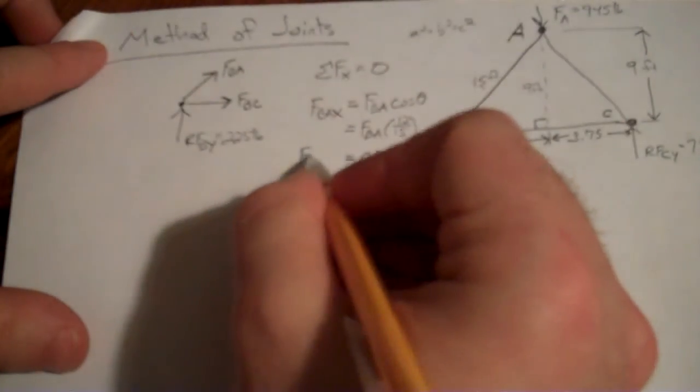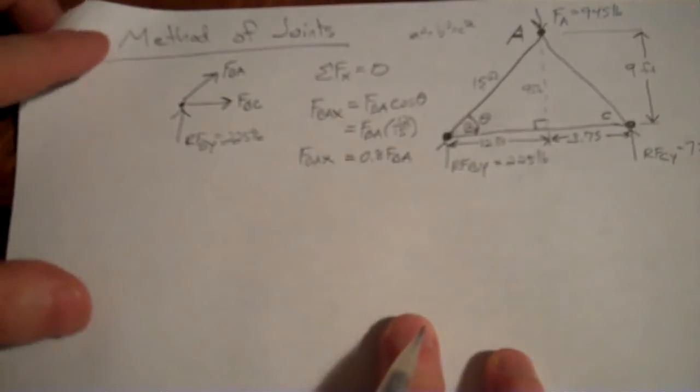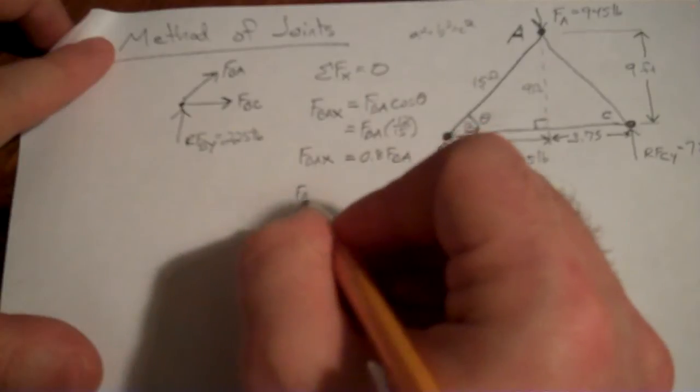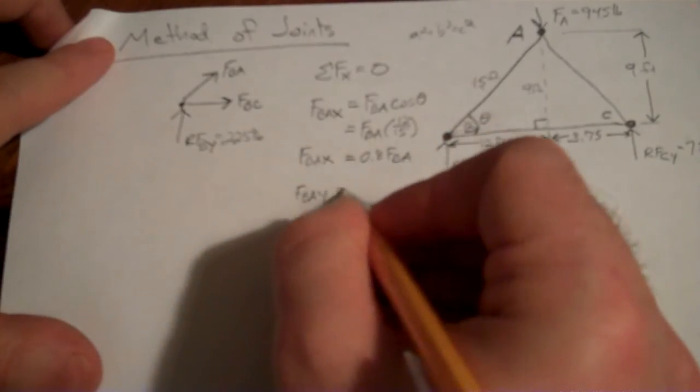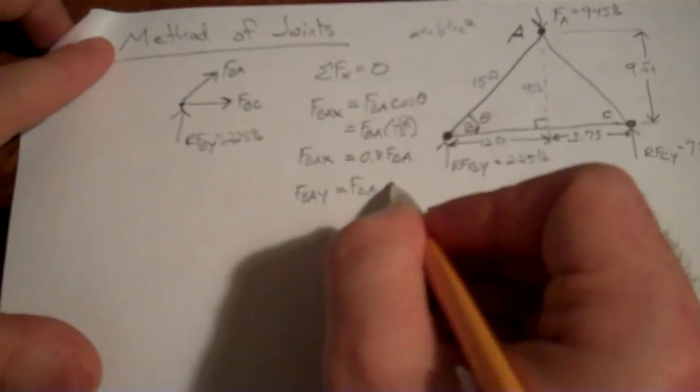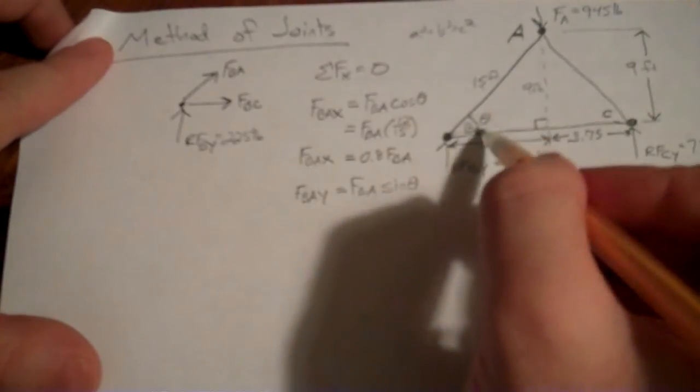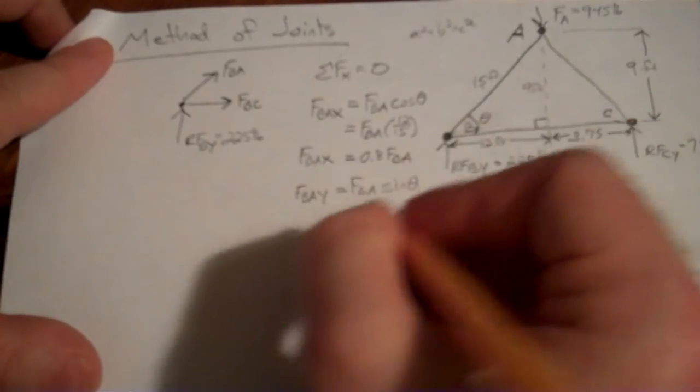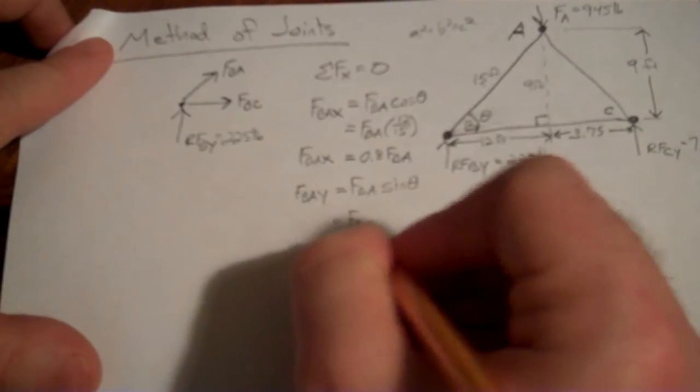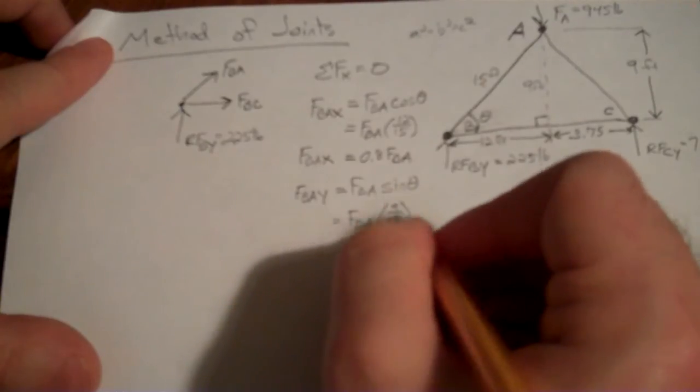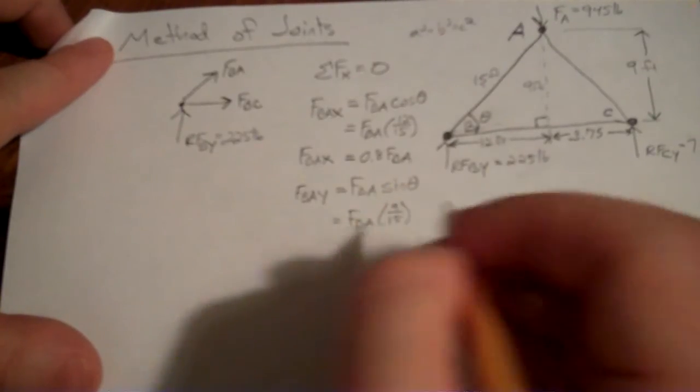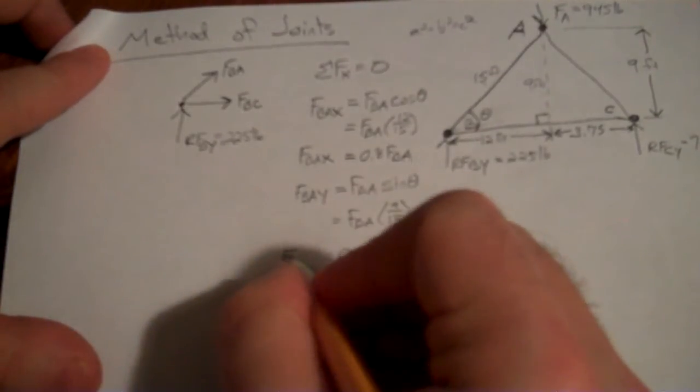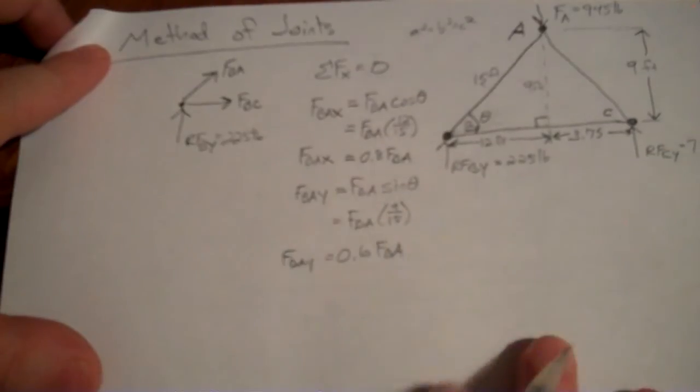Now that's FBA in the X direction, right? And we can do the same thing for the Y direction. Why don't we do that now because we'll need it soon anyway. So FBA Y would be FBA sine theta. Again, let's look back at our triangle. Sine of this theta would be opposite over hypotenuse, or 9 feet over 15 feet. So FBA 9 over 15, which is actually 3 fifths, or 0.6 times FBA. Okay, and that's FBA in the Y direction.